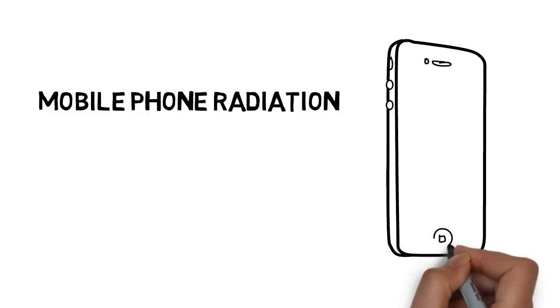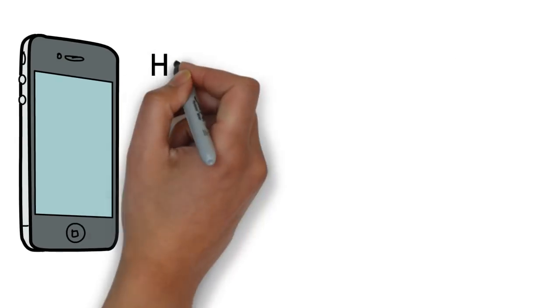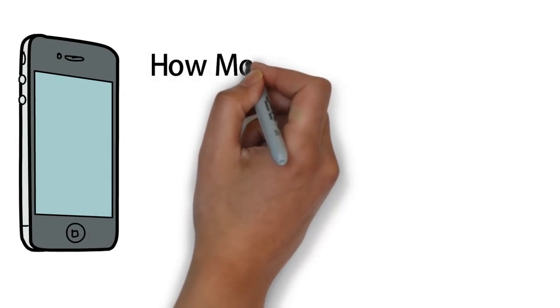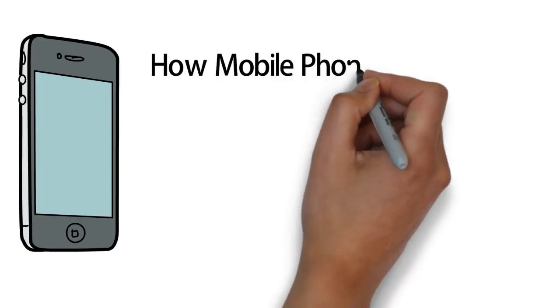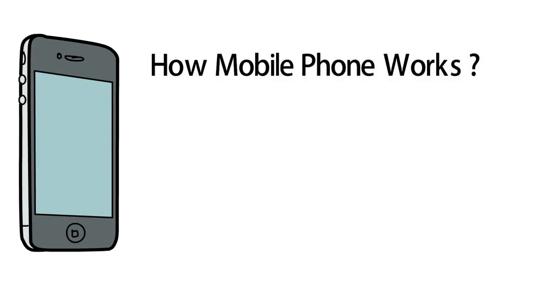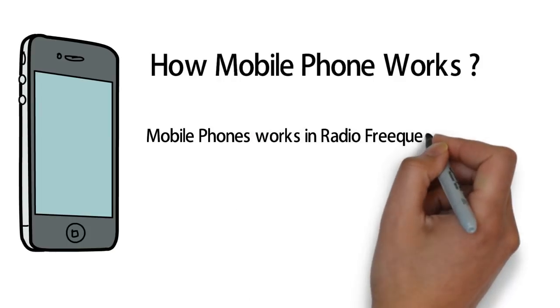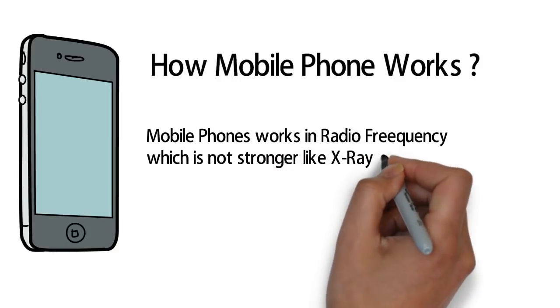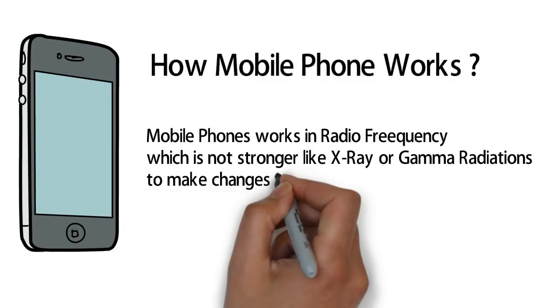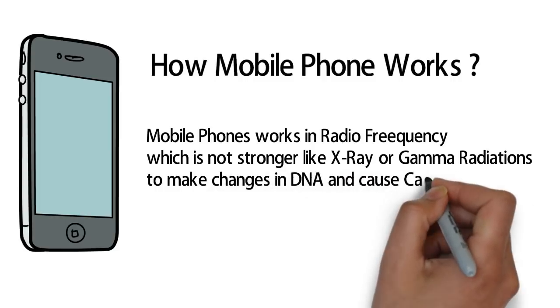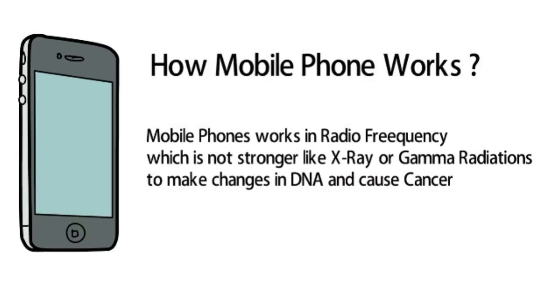I am going to talk about the radiation of mobile phones and the radio frequency of mobile phones. The DNA damage and cancer can be due to this. X-ray and gamma radiation can start this radiation, and in the face of cancer, radiation has been released.